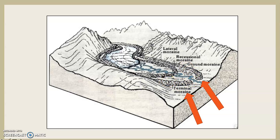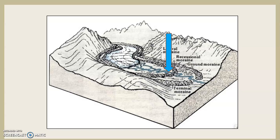As the glacier begins to recede and melt back, it's not going to retreat all the way back over the mountains as quickly as possible. It goes back in fits and starts, and as it does it may pause — for example five years, ten years, fifty years. When it does that, it creates a new moraine along its snout. This is known as a recessional moraine. Recessional moraines form along the snout and indicate a period of equilibrium in a receding glacier.